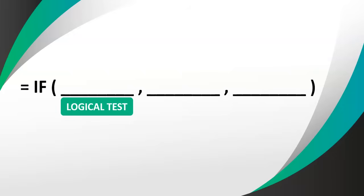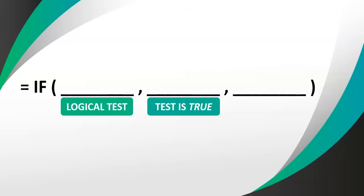Basically, we ask ourselves that logical test — it's a question, and that question can only be true or false, or yes or no. The second parameter is what we will do if the logical test is true. We can put a particular piece of text there that will be displayed if the logical test is true, or we can put a formula that will run if the logical test is true. If the answer is true, we do whatever's in the second parameter, and then we stop.